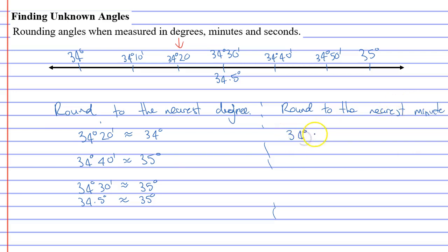Let's say you've got 34 degrees 25 minutes and 19 seconds. What you need to do is remembering that 30 is the middle, this one would round down to 34 degrees 25 minutes. So you just take off the seconds.